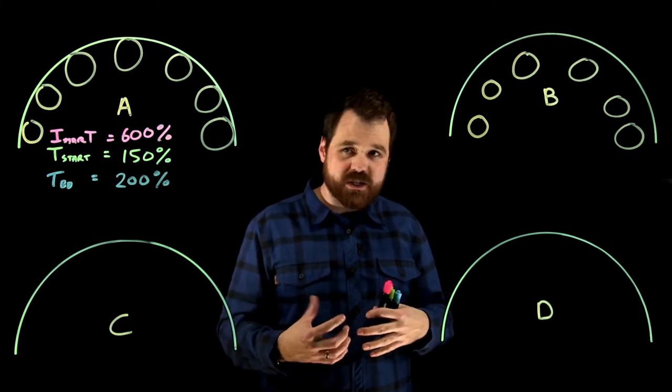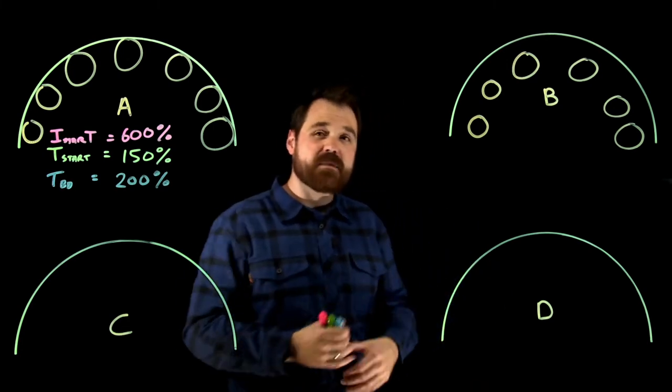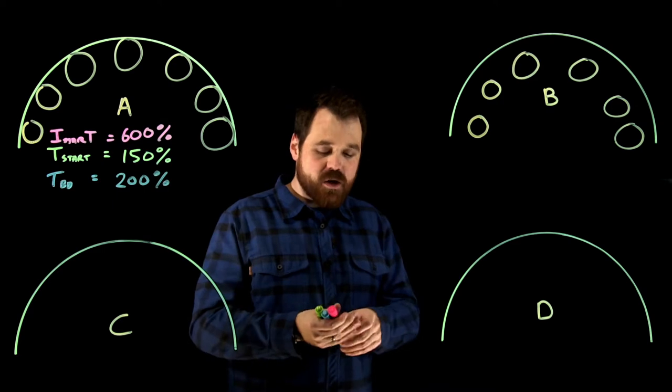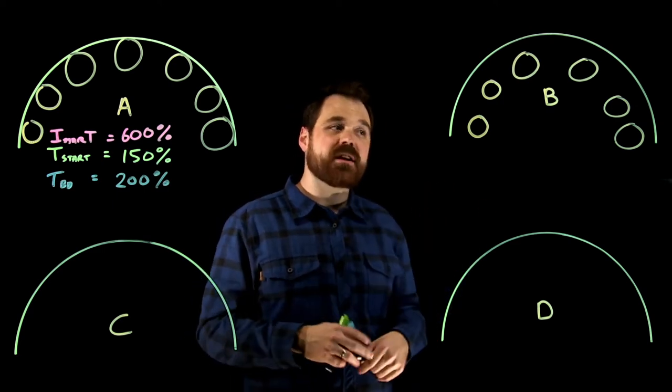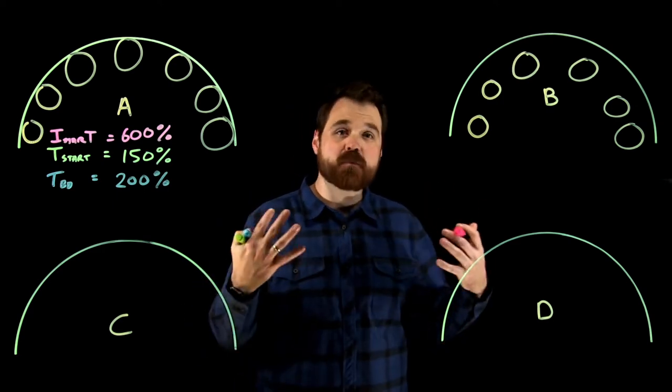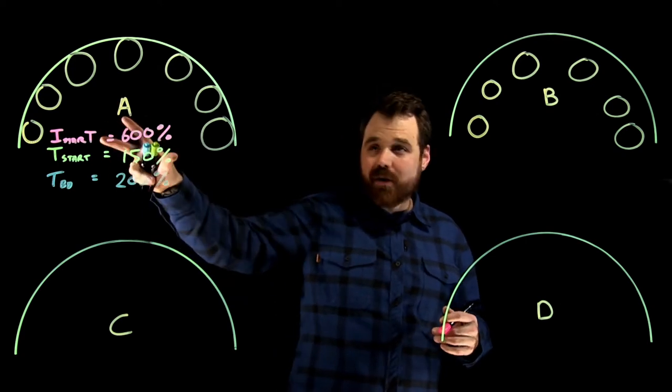So now what this does is we still have that really low resistance of the large rotor bar. But what we see now is we see a higher inductance. So we get a little bit more losses because of that, but because of that higher inductance, we actually see a little bit lower of an inrush current, which is what makes this the most popular rotor.